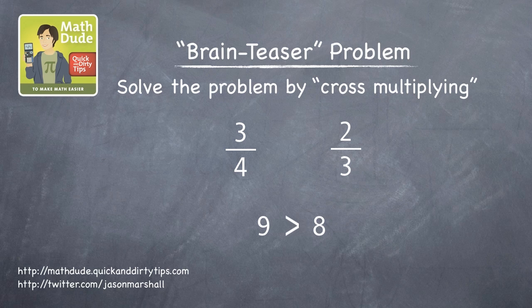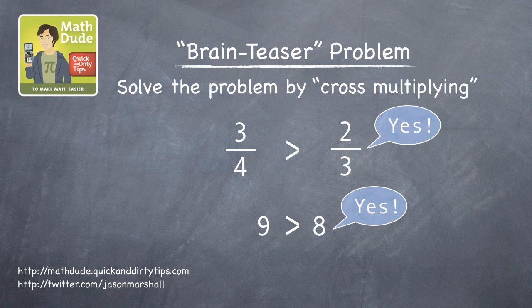Now compare those two numbers. Three quarters is the first one greater than the second. It is. So what does that mean? It means the first fraction, three quarters, is also greater than the second, two thirds. That's all there is to it.